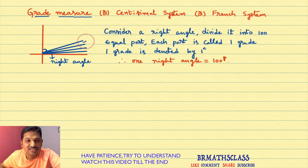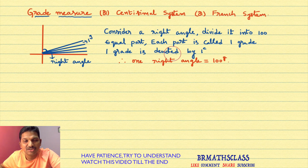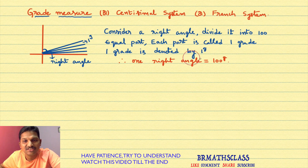For example, you see this — this is one part, this is another part, this is another part like that. Each part is known as one grade. One grade is denoted by one superscript 'g'.